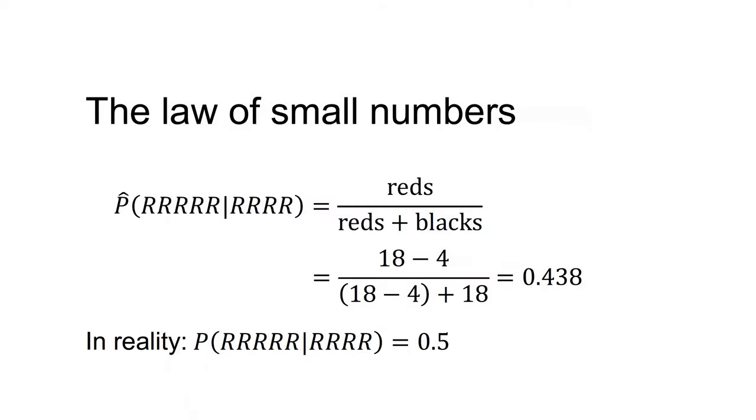However, Freddie believes that after four reds, black is more likely on the next spin. He is wrongly computing the probability based on a belief that only 14 reds remain along with 18 blacks. That is, he believes the probability of 5 reds following a sequence of 4 reds equals the number of reds in the urn divided by the number of reds plus the number of blacks, which equals 18 minus 4 divided by 18 minus 4 plus 18 equals 0.438.